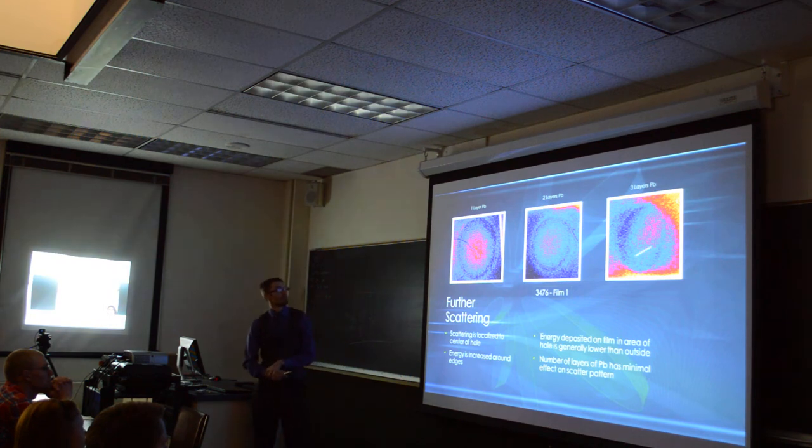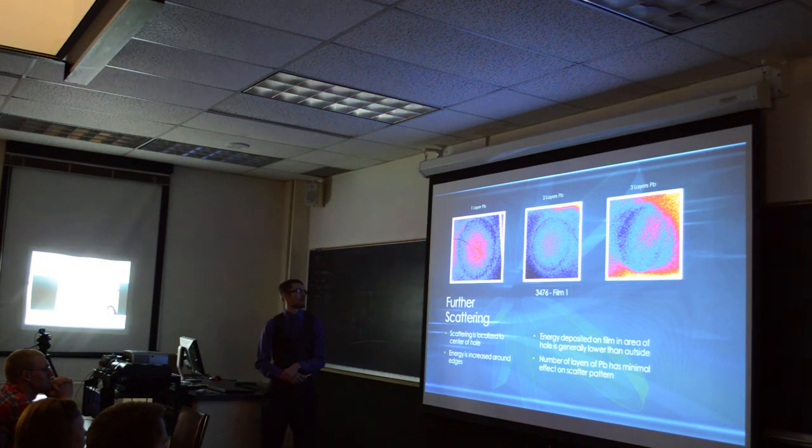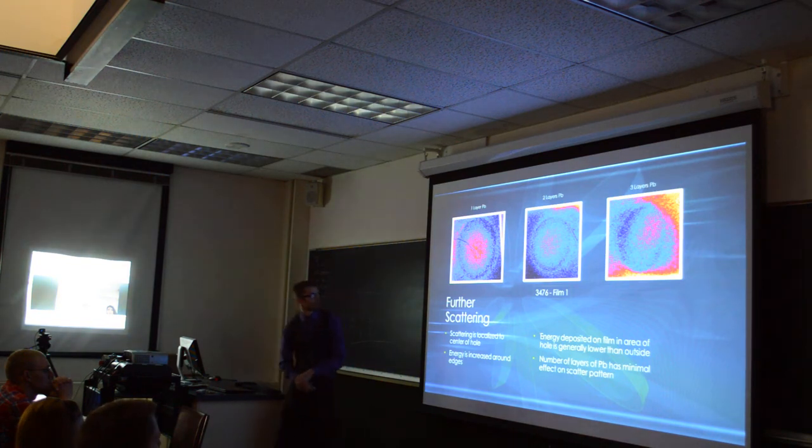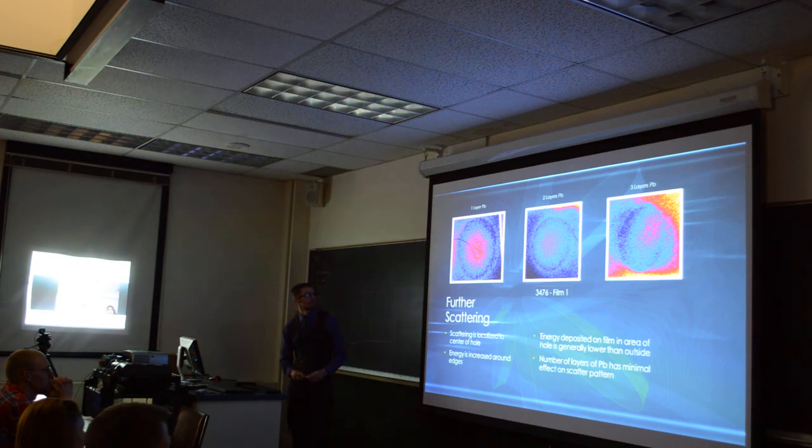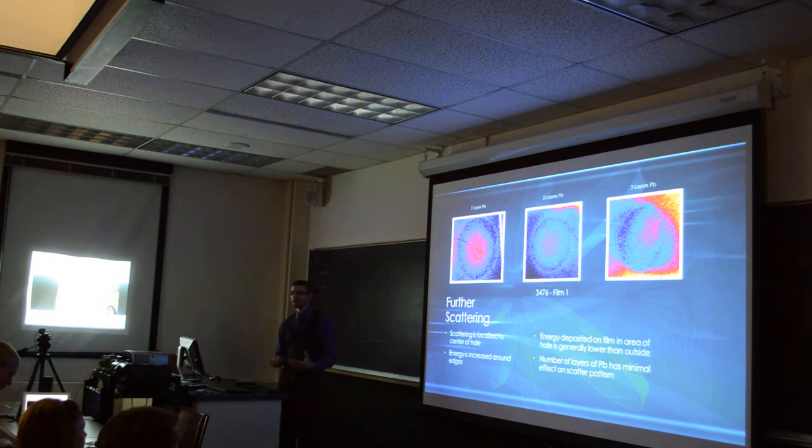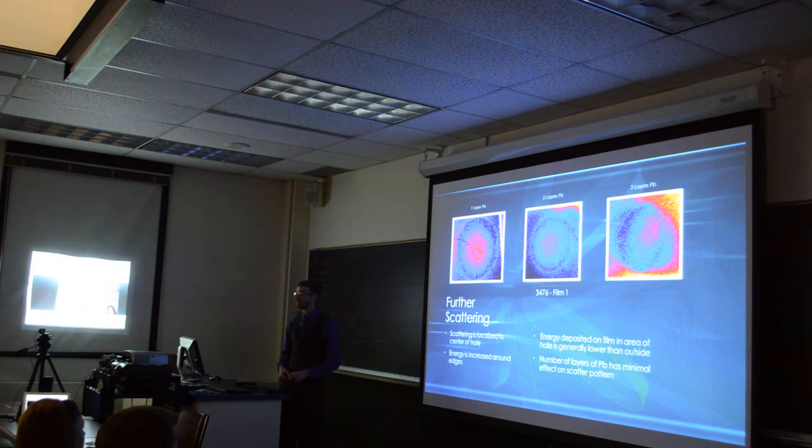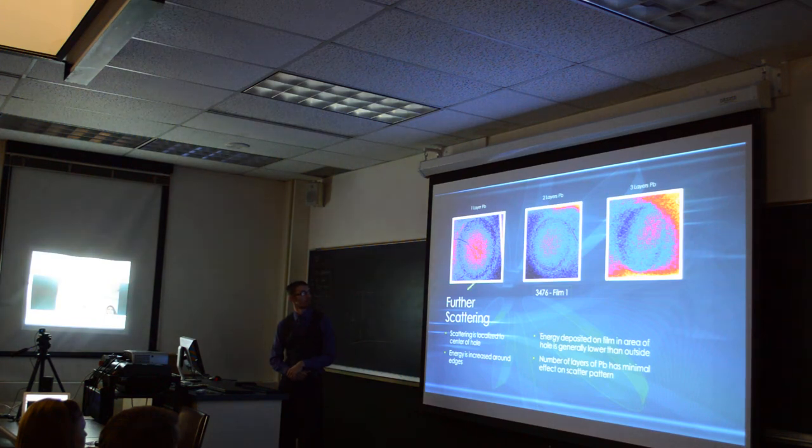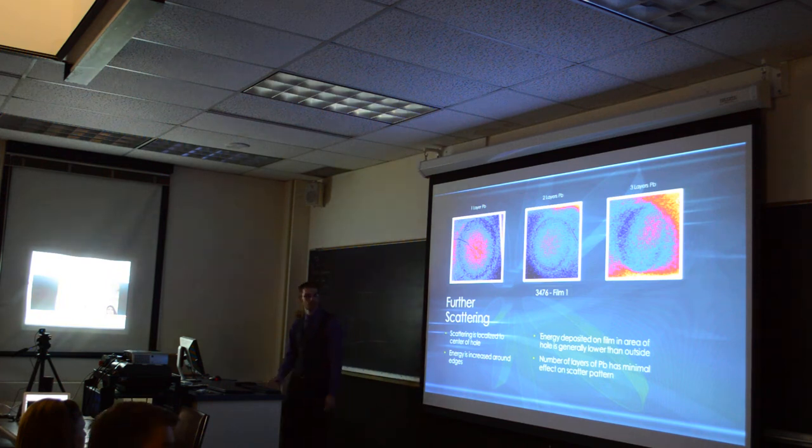And this is also a composite through one film. And it was also showing this, and most of them showed this also, that there's kind of a periodic type function like this. The scattering effect, these are all single films showing essentially, or single holes on the same film showing essentially the same thing. The scattering is localized in the middle. The lighter spots on the inside are lower energies. This darker ring around the outside is a higher energy. This is the one layer, two layer, three layer. So the energy deposited in the area of the film is generally lower than the outside, which is interesting because there's no shielding there.